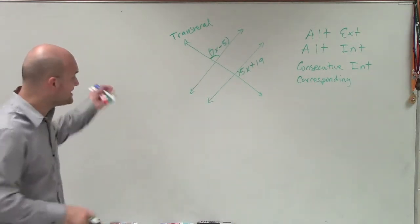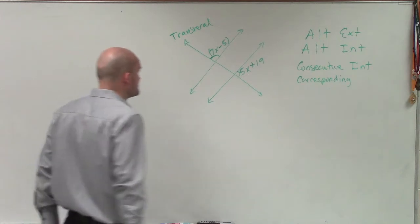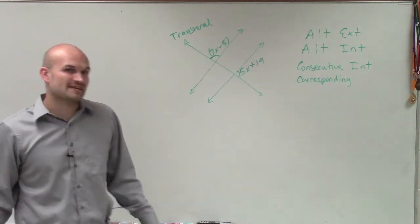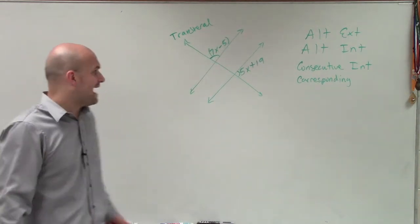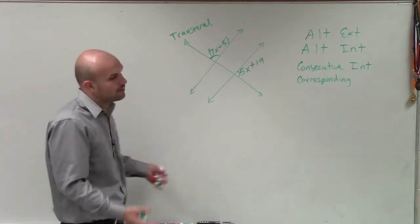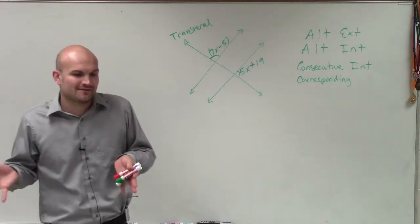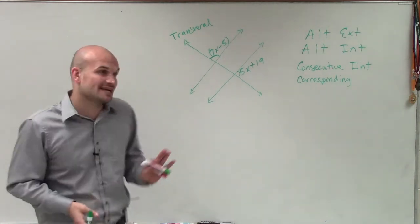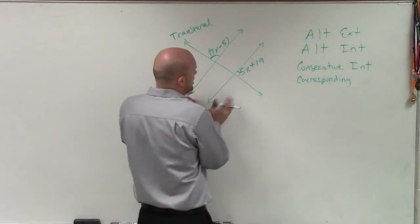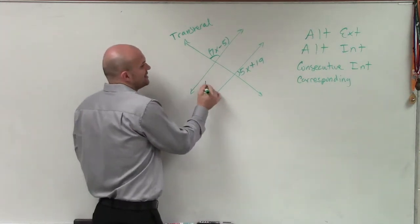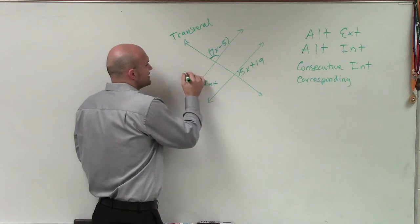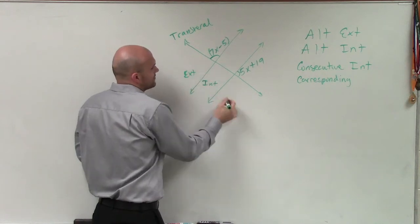So we take a look at these two angles and ask: do they fall under any of these definitions? When we're determining if angles are interior or exterior, we look at the lines we're trying to prove parallel. If the angles are between the lines, then they're interior. If they're outside the lines, then we call them exterior.